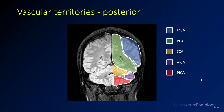In the coronal view covering the cerebellum: the PCA territory covers the superior parietal, occipital, and posterior temporal lobes; the MCA covers the lateral supratentorial brain. In the posterior fossa there are three major vessels — the SCA or superior cerebellar artery covers the top of the cerebellum; the AICA or anterior inferior cerebellar artery covers the lateral cerebellum and is the smallest territory; and the PICA or posterior inferior cerebellar artery covers a large territory in the inferior cerebellum.